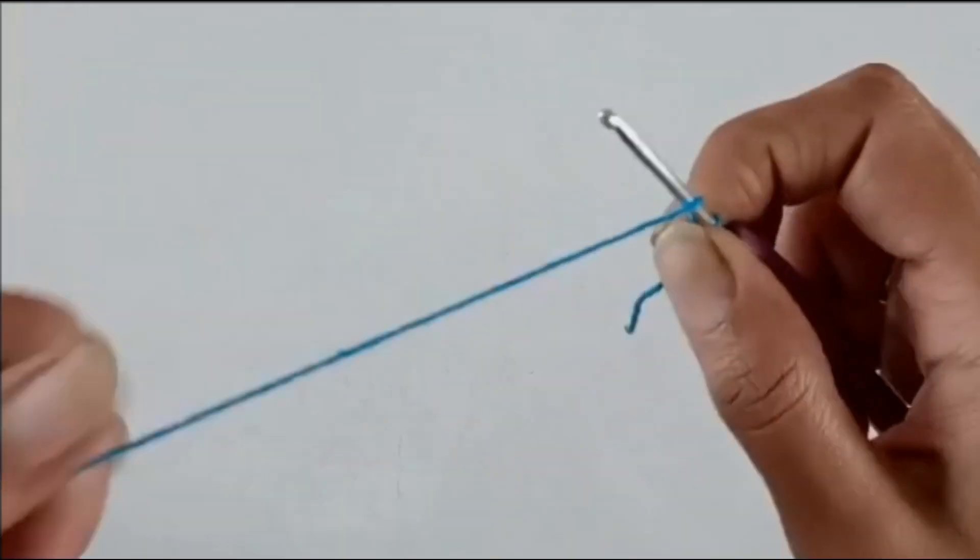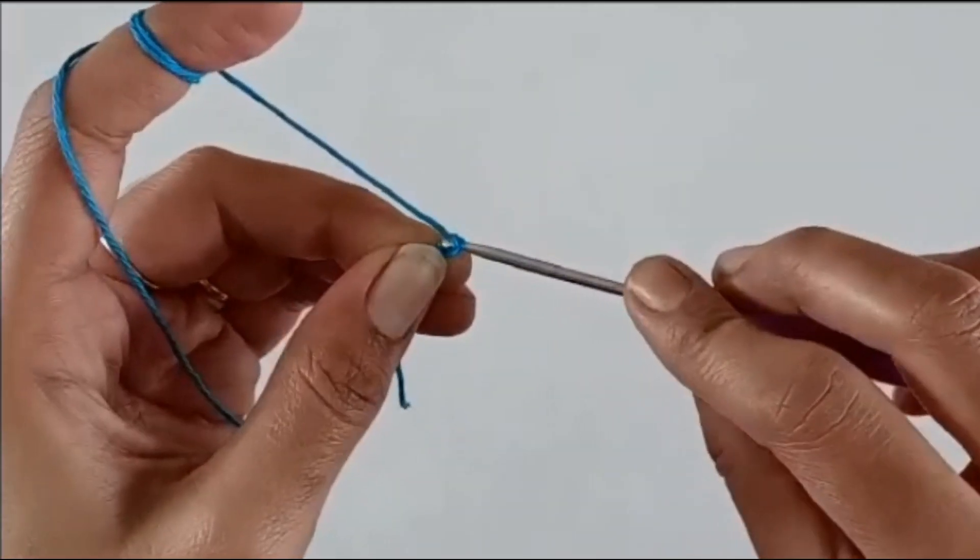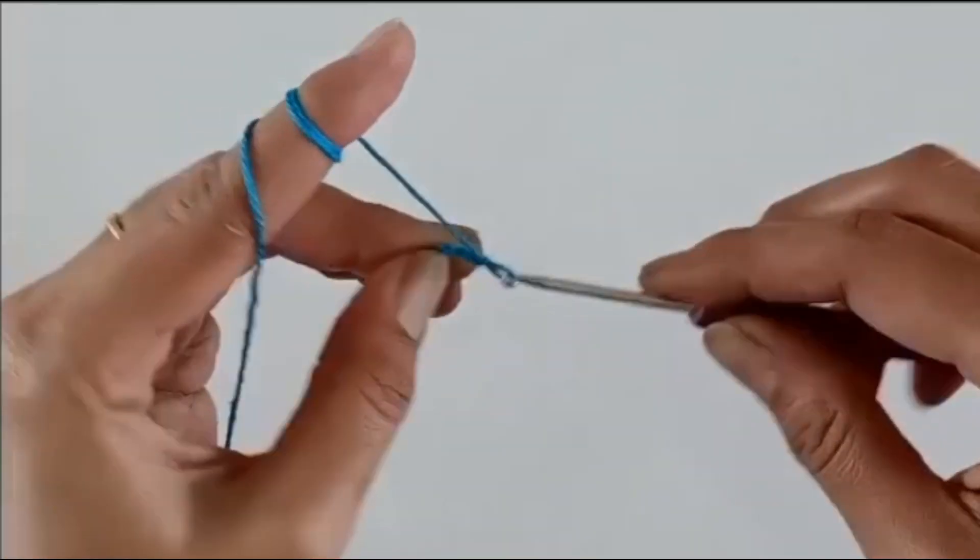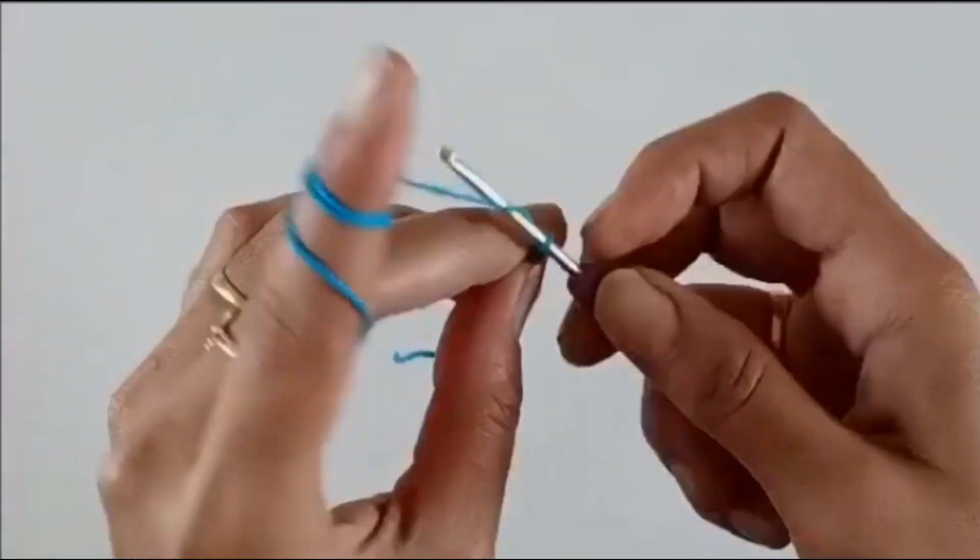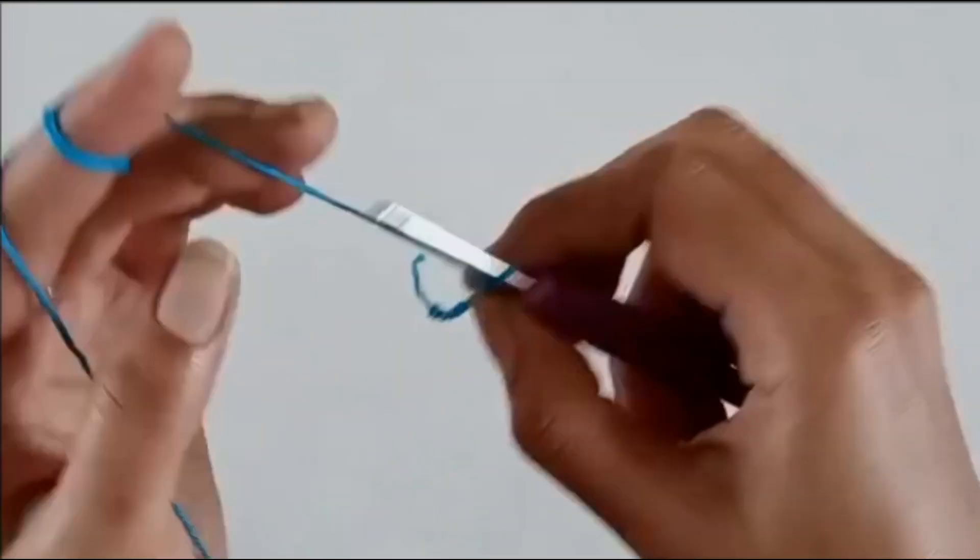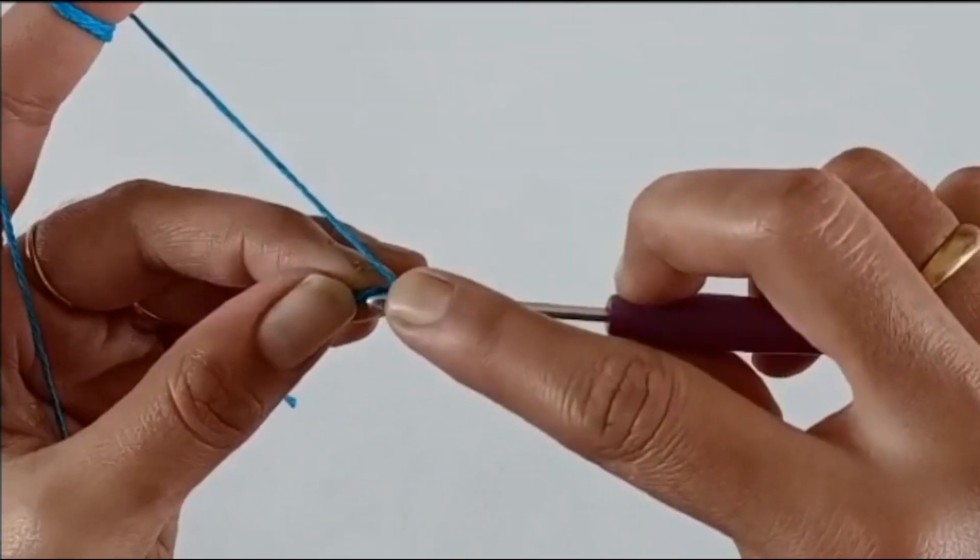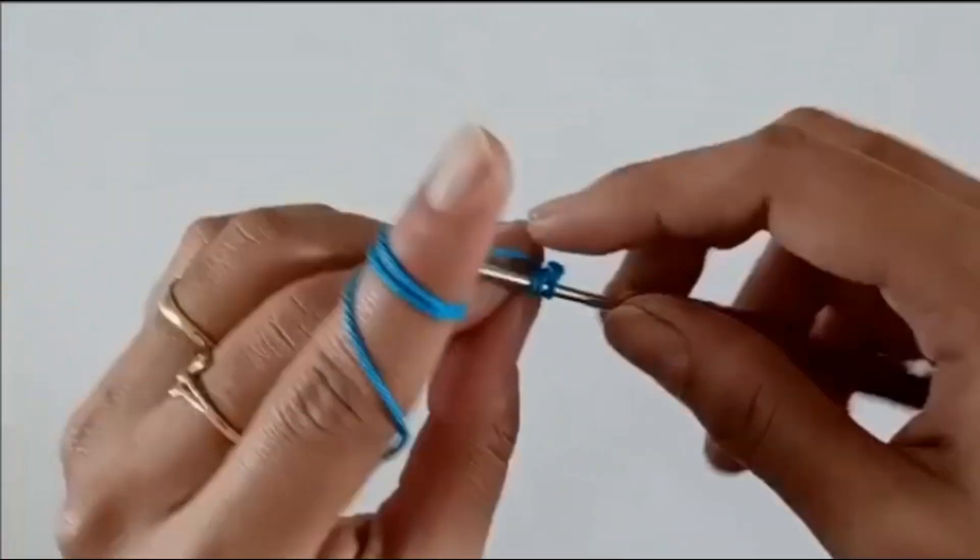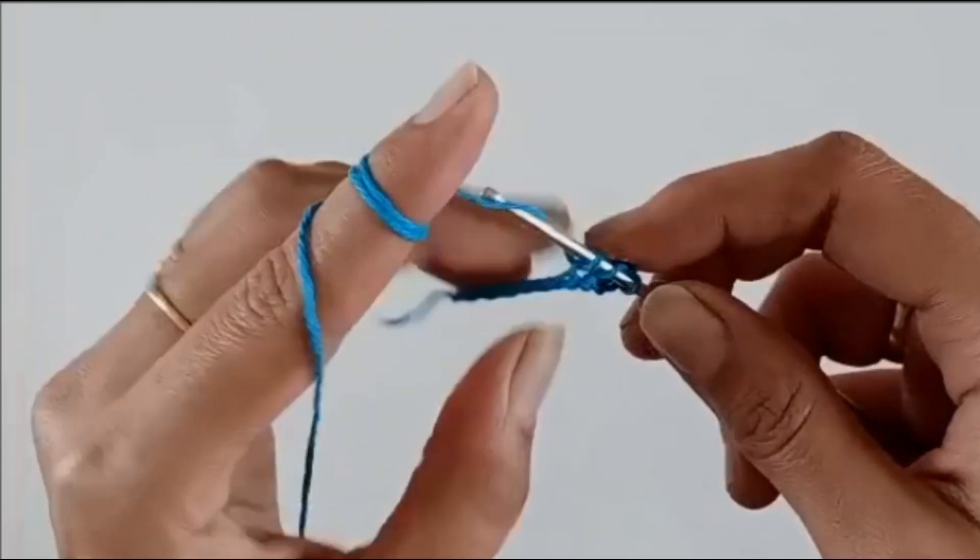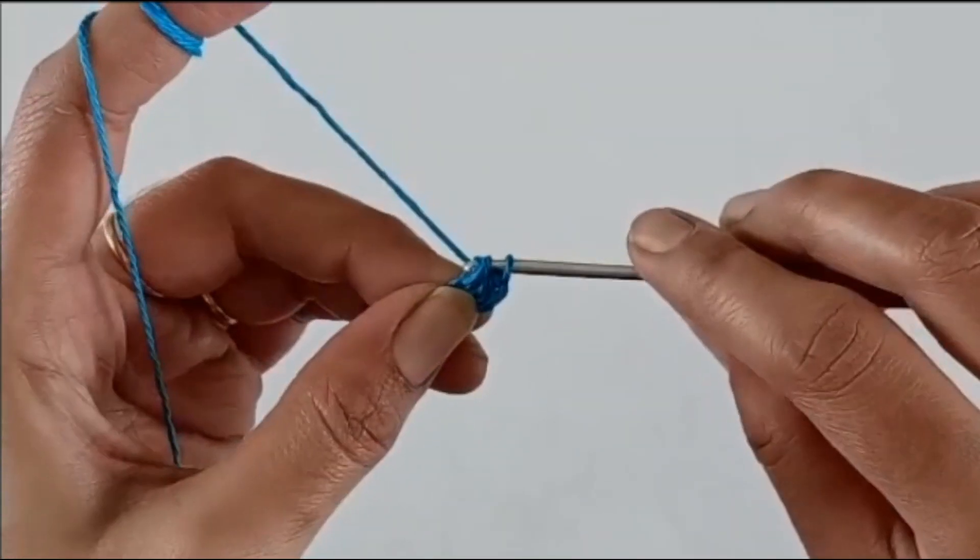And work 10 chains. Now skip the first two chains from the hook and going into the third chain work one half double crochet. Now going to each of the chains, just work one half double crochet till the end of the round.